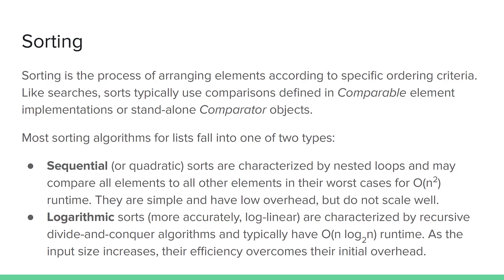Logarithmic sorts — or more accurately, log-linear sorts — are characterized by recursive divide and conquer strategies that greatly reduce the total number of comparisons needed to sort, resulting in O(n log n) runtimes. They have greater overhead than sequential sorts, but as the input size increases, their inherent efficiency more than makes up for that initial overhead. There are many sorting algorithms of both types. We're going to look at three of the best-known sequential sorting algorithms and two of the best-known logarithmic sorting algorithms for linear data structures.